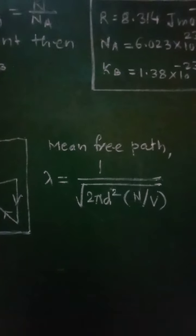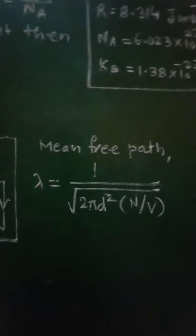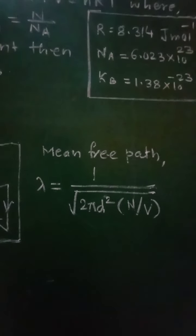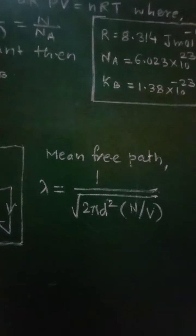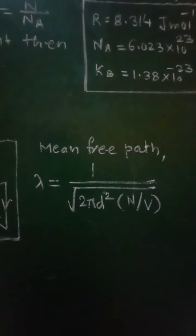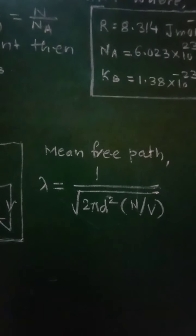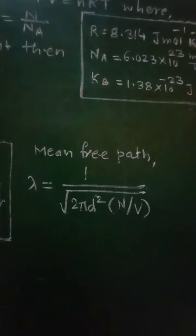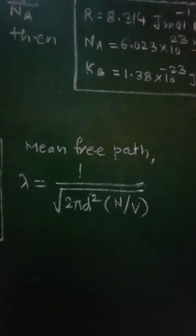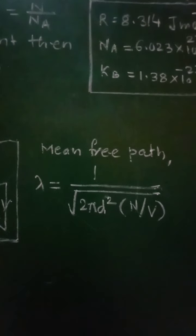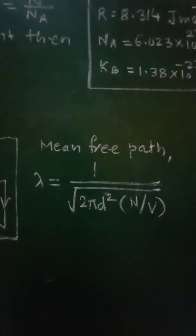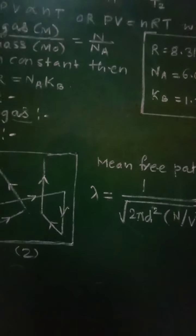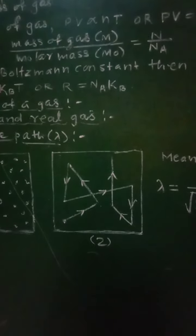In the expression, d² is at the denominator, where d is the diameter of the molecule. Therefore, the second conclusion is: smaller the size of the molecule — that is, smaller the diameter — less is the chance of collisions and longer will be the mean free path. Thus λ is inversely proportional to d².